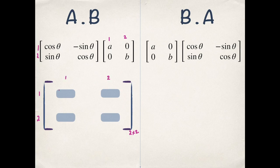This element is from first row and first column. So we take first row and first column and multiply the corresponding elements. So a is multiplied with cos θ and 0 is multiplied with sin θ. So we get a cos θ.